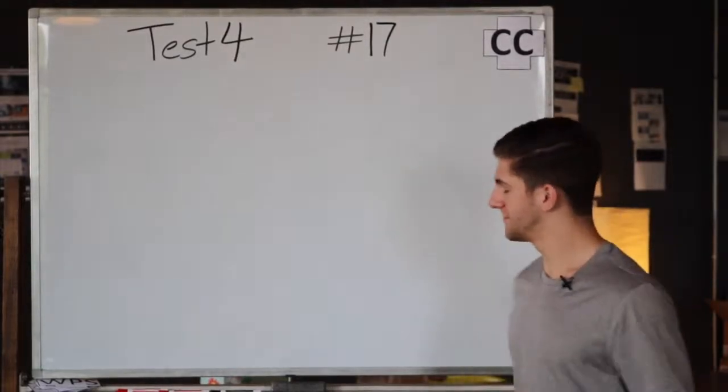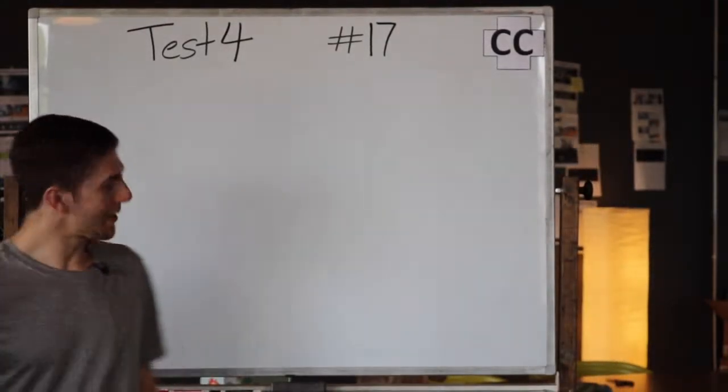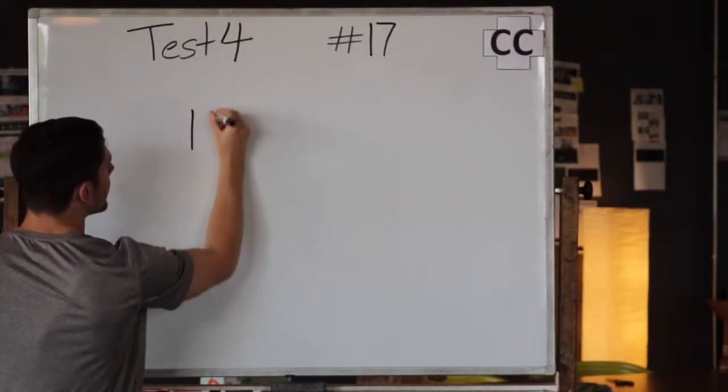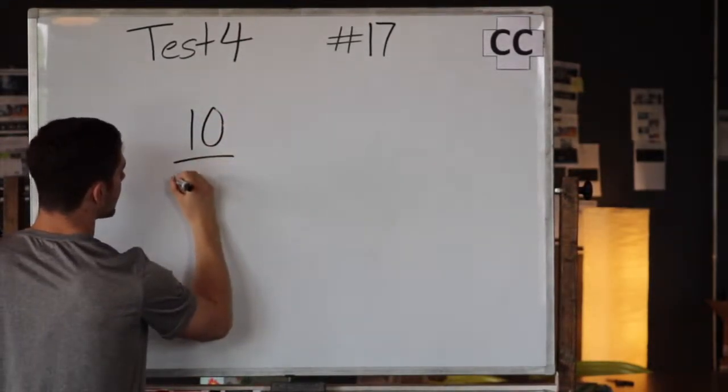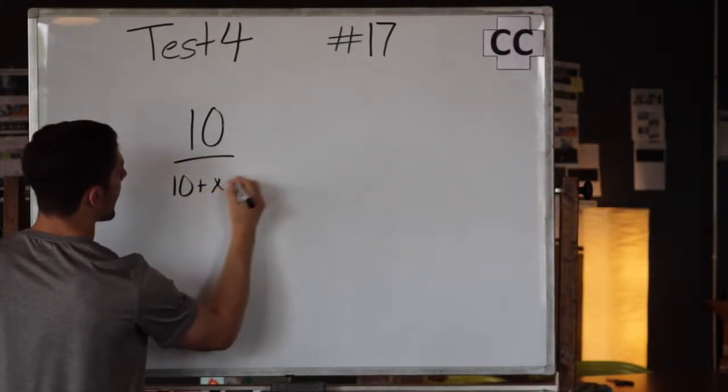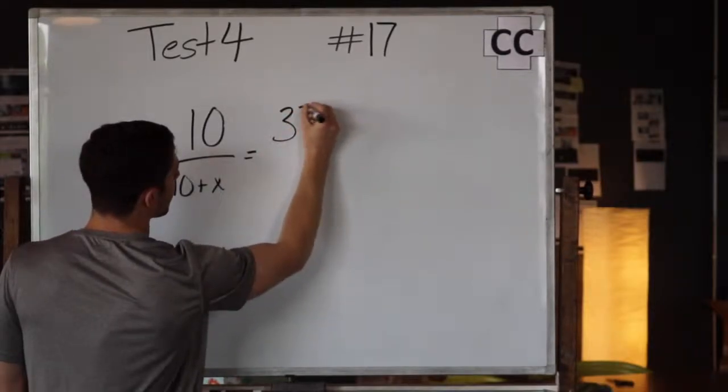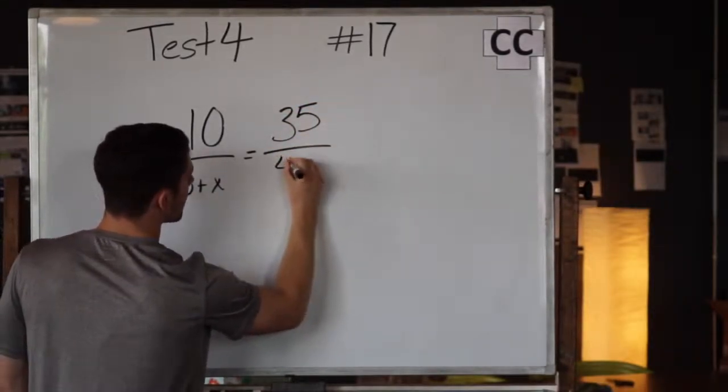Awesome, so I should have probably written this on the board before we started. So we have in the problem 10 over 10 plus x equals 35 over 42.